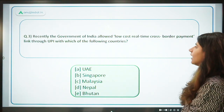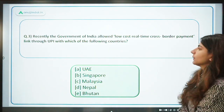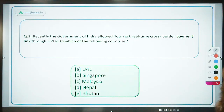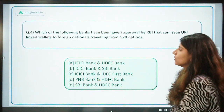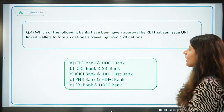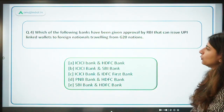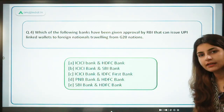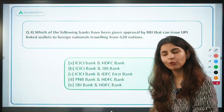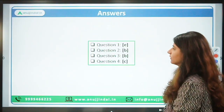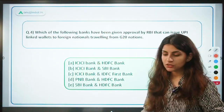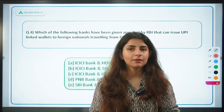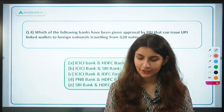Recently the government of India allowed a low-cost retail cross-border payment link through UPI — you will answer which country. Also, which two banks have been given RBI approval to issue UPI-linked wallets to foreign nationals traveling from G20 nations? Answer in the comments. I hope you liked the session. RBI exam can come any time — all the best, thank you.